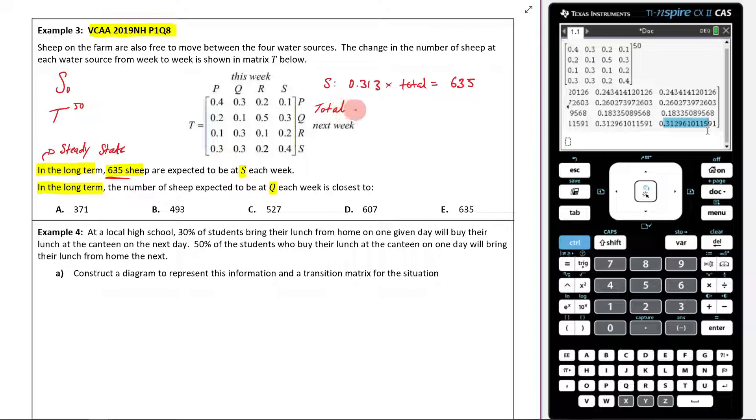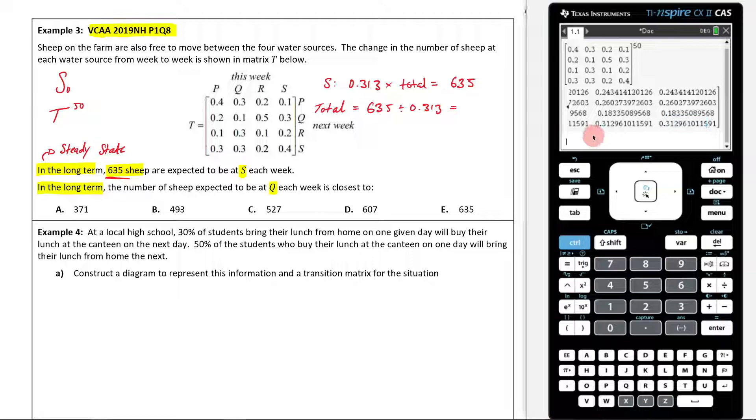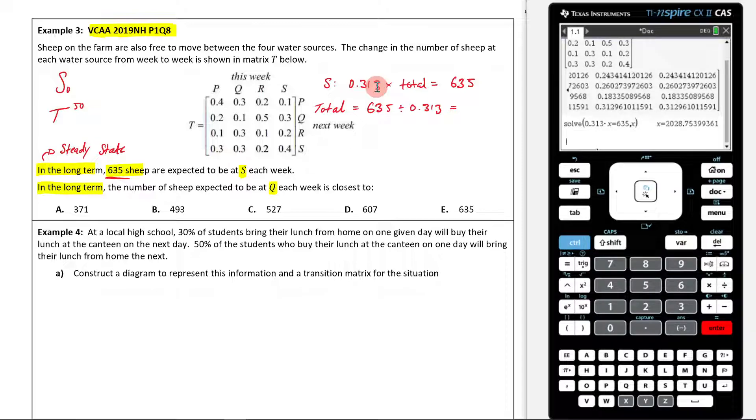To figure out the total amount of sheep, I'm going to go 635 divided by 0.313. Now, if that math there freaks you out, you could just use your solve function. You could go menu 3, 1, and type in exactly what you see here, 0.313 times by some unknown, which we'll call X, is equal to 635 comma X. That's going to end up with 2028.75. So I'll round 2029. That is the total amount of sheep I'm going to have.